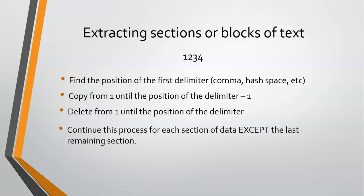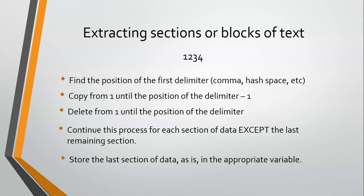When we are left with the last section, all that's left is what we want. We can't find the position of a comma and copy from one till that position minus one because there is no comma — it'll copy nothing. So when we get to the last section, all we do is record whatever's left over into wherever we want to store it. If I had a variable called ID code, I would just say ID code equals whatever that string is. Just make it equal to whatever's left over. That is the technique with extracting sections or blocks of text.